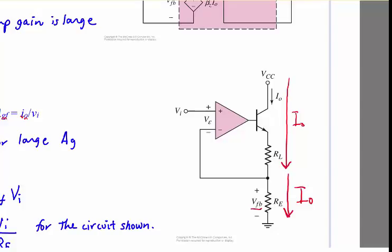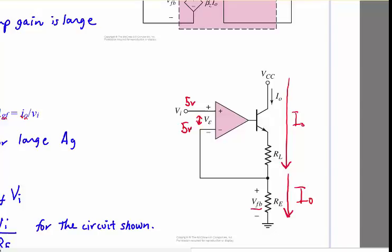We can think about what this op amp is going to do: when we have sufficiently high gain, it's always trying to make its two input terminals equal. If we apply 5 volts at the non-inverting input, the op amp will keep moving its output until the inverting input is also at 5 volts. Knowing RE, we can take 5 volts divided by RE to figure out the output current, and this transistor becomes a buffer — it allows us to drive a lot more current than the op amp would allow alone.